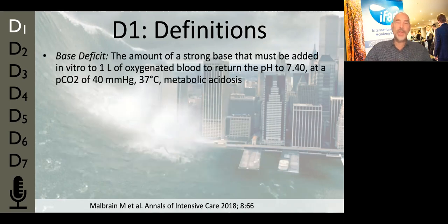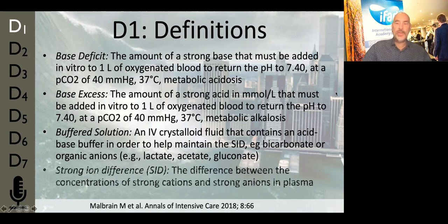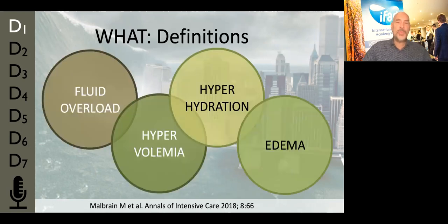When it comes to acid-base, we can explain the base deficit as the amount of strong base needed to restore the pH to 7.4, and the base excess is the strong acid that needs to be added. A buffered solution contains an acid-base buffer — usually bicarbonate or other organic anions — to maintain the strong ion difference, which is the difference between the strong cations and anions that are fully dissociated in water. We do speak about fluid overload, hypervolemia, hyperhydration, and edema.